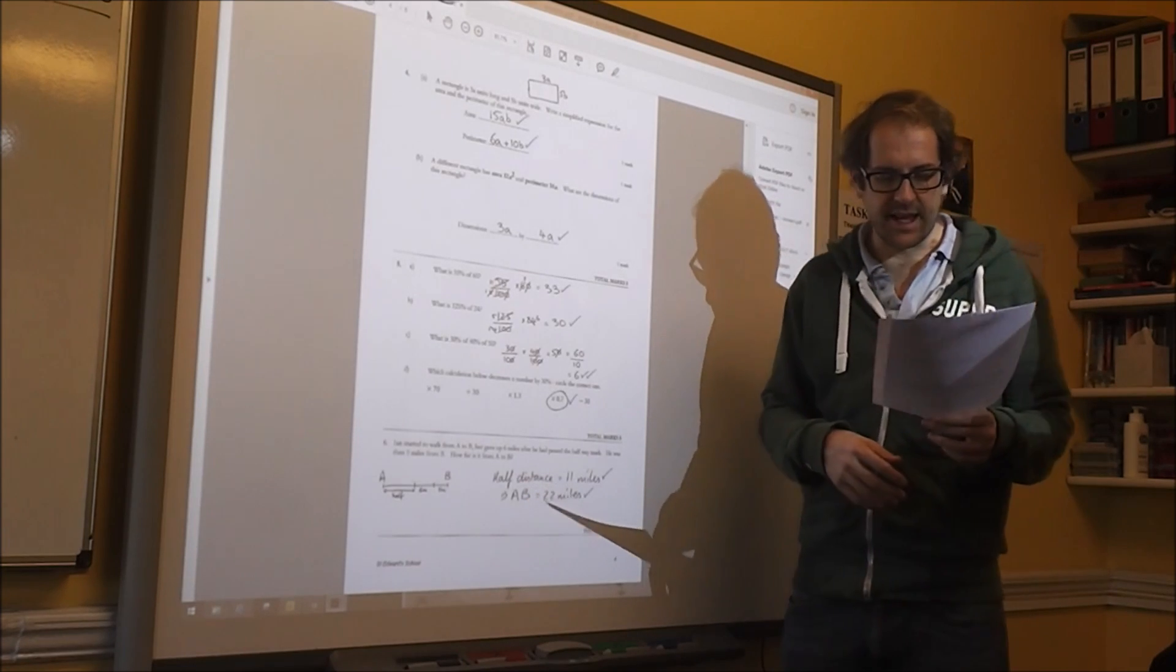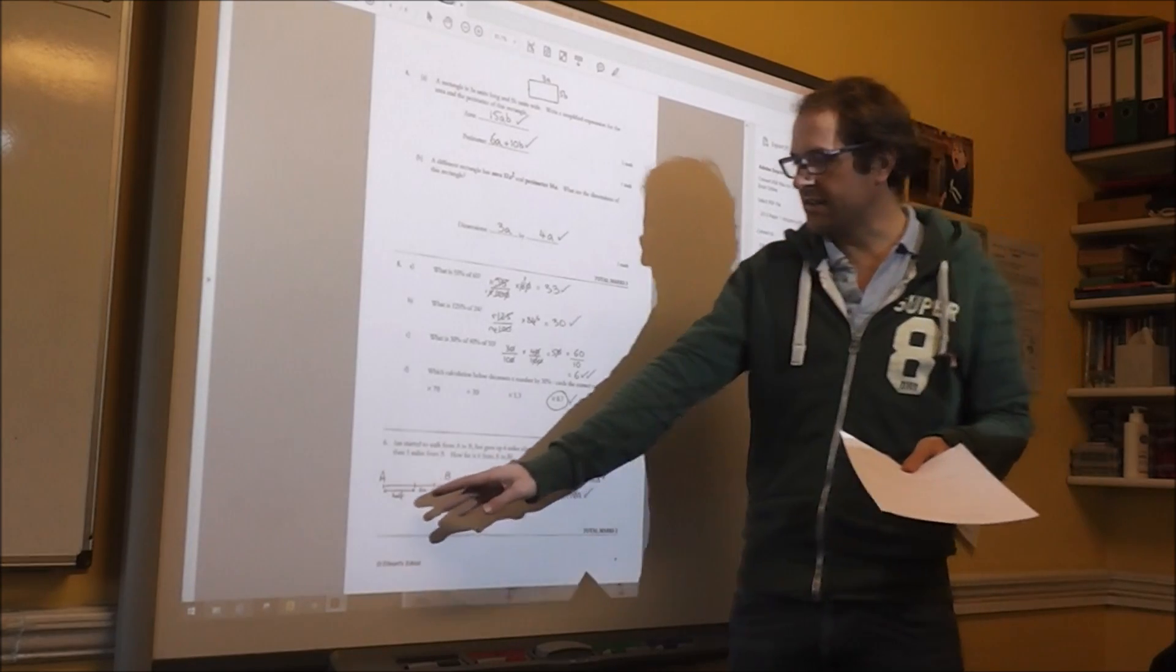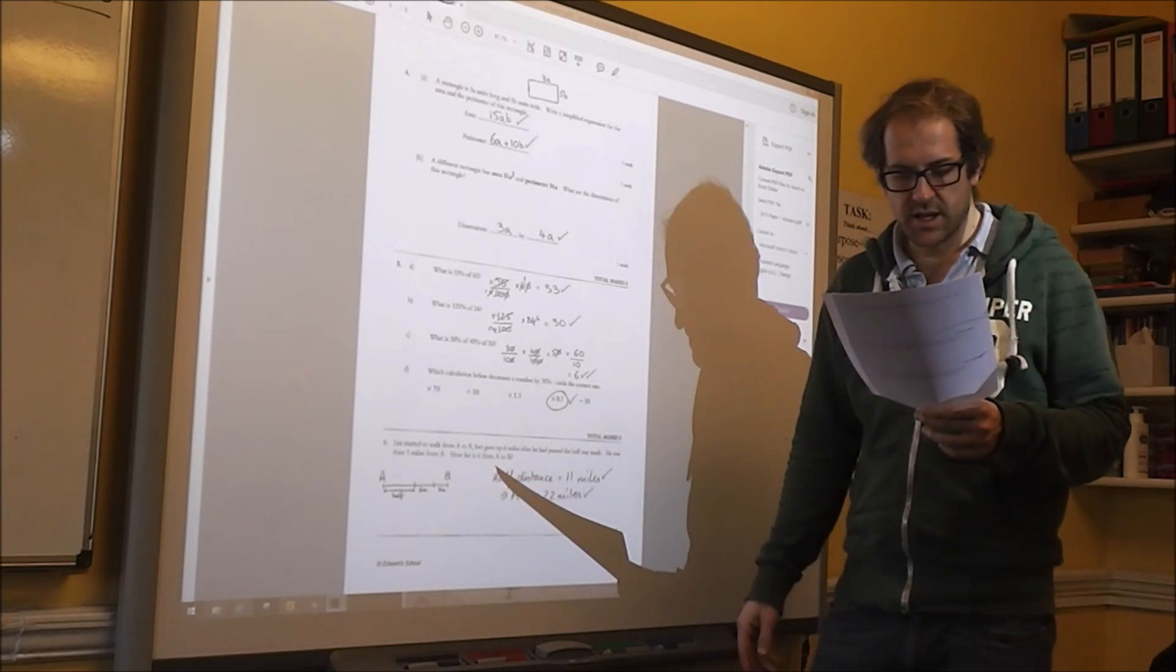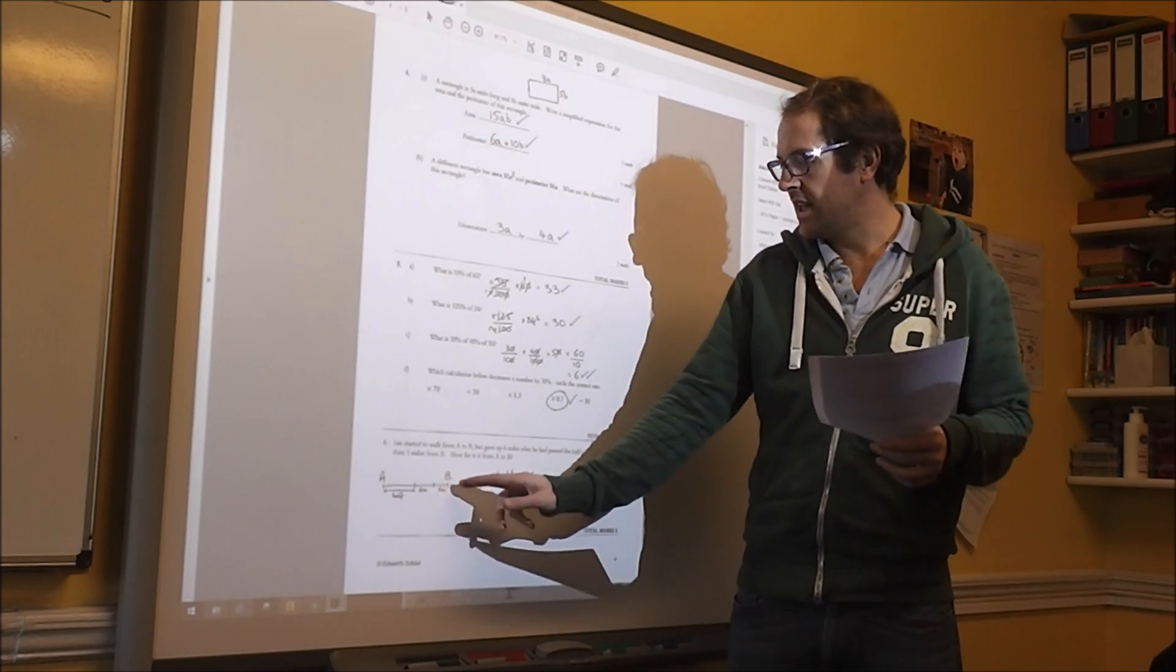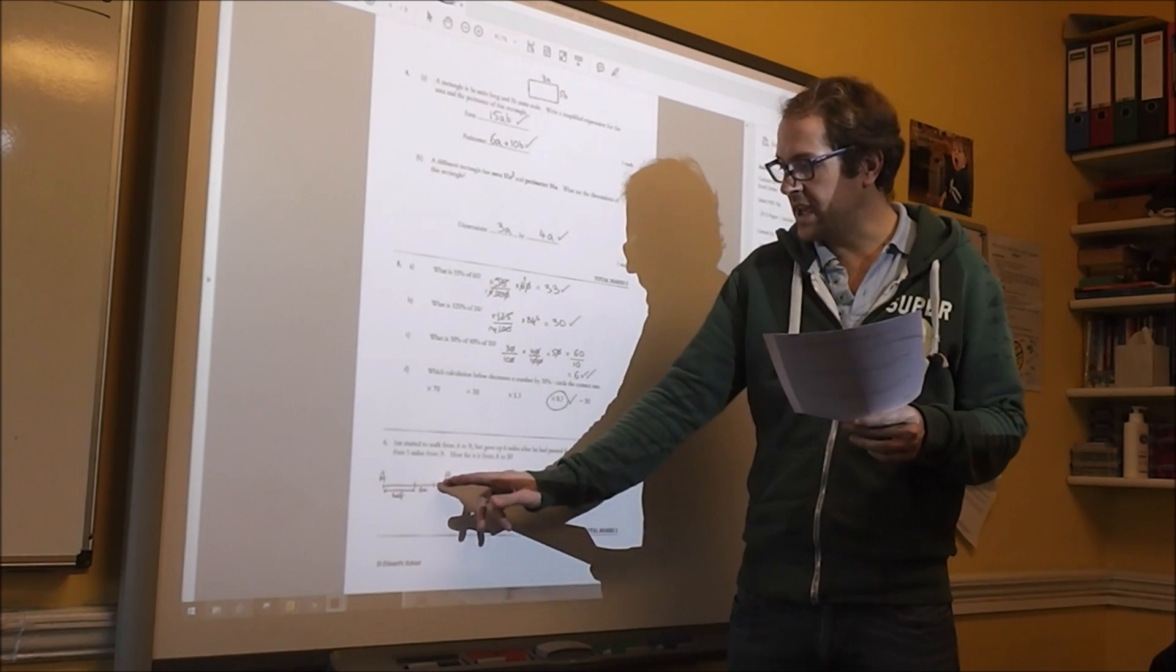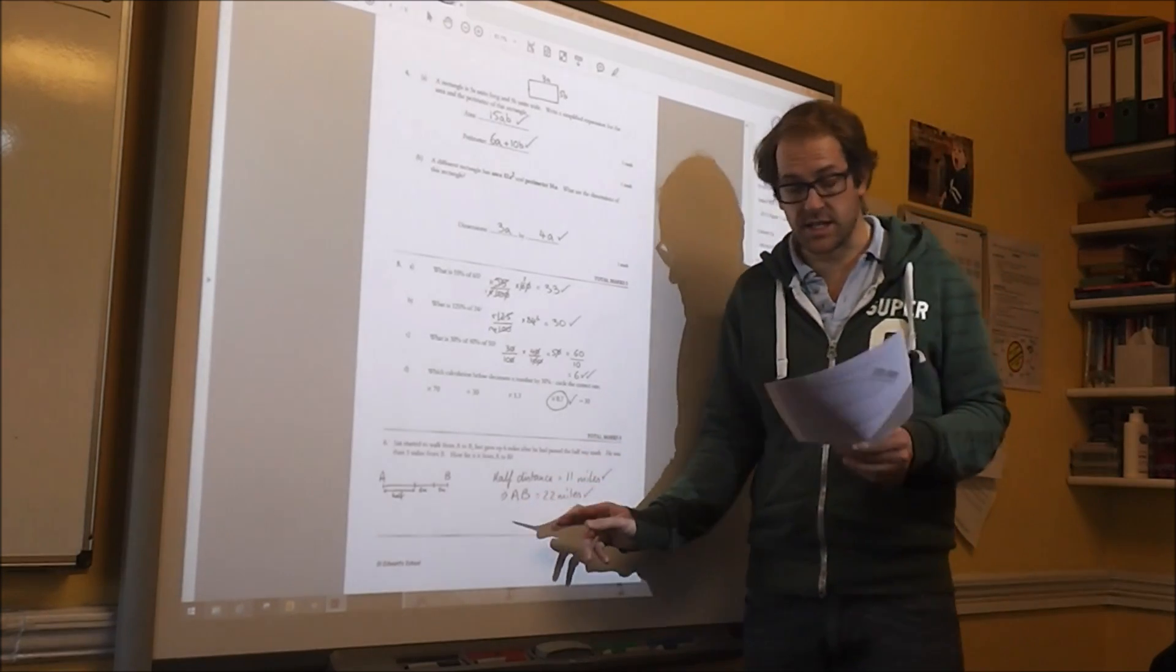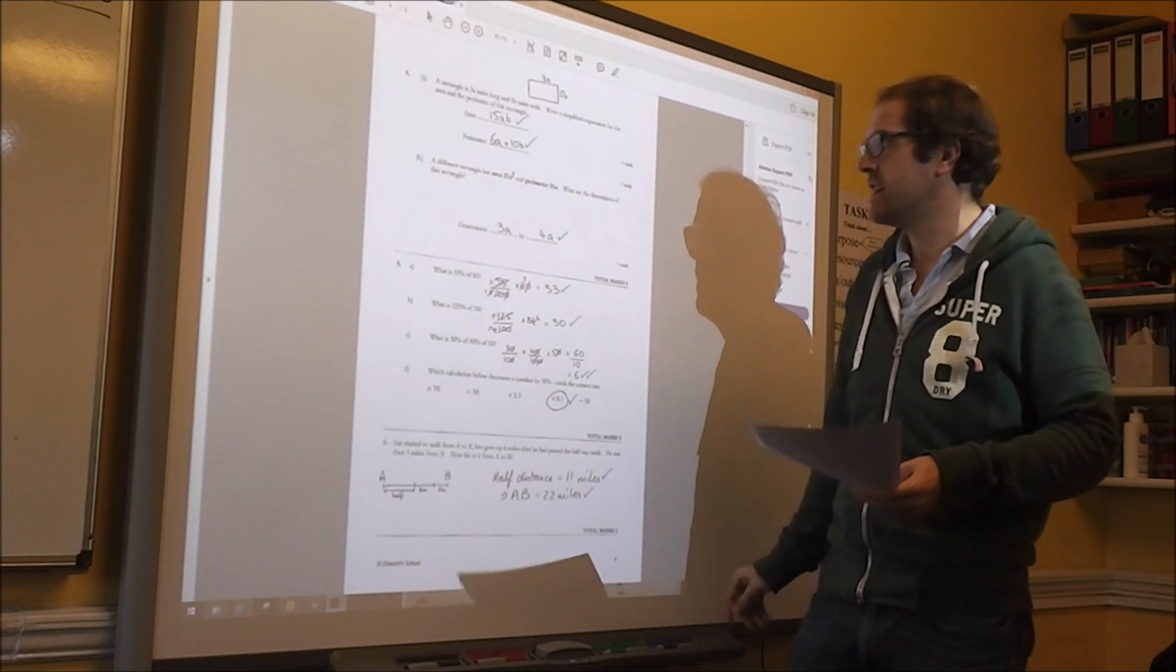Number 6 is a nice little logic problem here. I drew a quick diagram. So A to B, I know that's half. And he's walked 6 miles after halfway. And that left 5km to B, 5 miles to B. So that half is 11. So the whole distance is 22. So a nice little diagram can really help there.